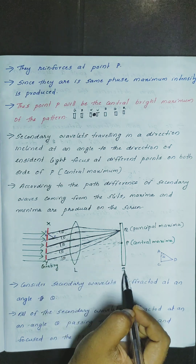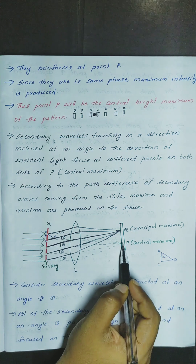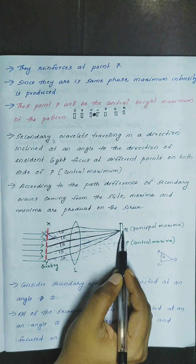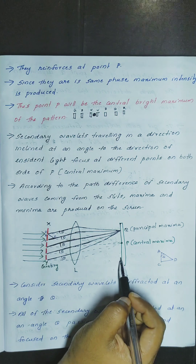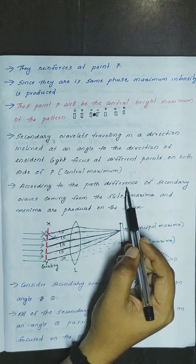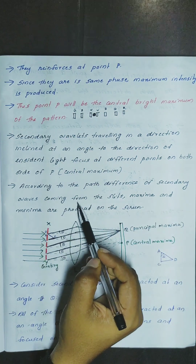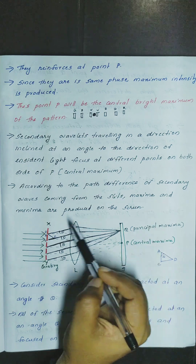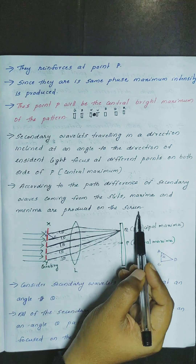They focus on the screen at different points. This central maxima will focus on both sides. According to the path difference of secondary waves coming from the slits, maxima and minima are produced on the screen.